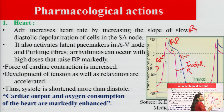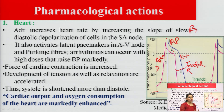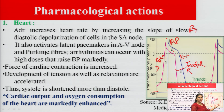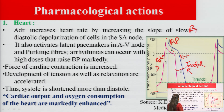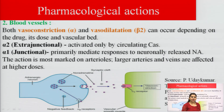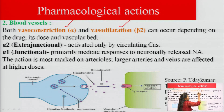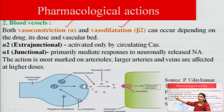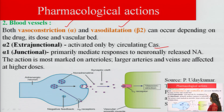Via beta-1 receptors (GPCR), adrenaline increases intracellular calcium concentration, reducing time between successive action potentials, thereby increasing cardiac contractility and heart rate, and increasing oxygen consumption. On blood vessels, alpha receptor activation causes vasoconstriction, while beta receptor activation causes vasodilation. Alpha-1 receptors are junctional, responding to neuronally released noradrenaline; alpha-2 receptors are extrajunctional, activated by circulating catecholamines.